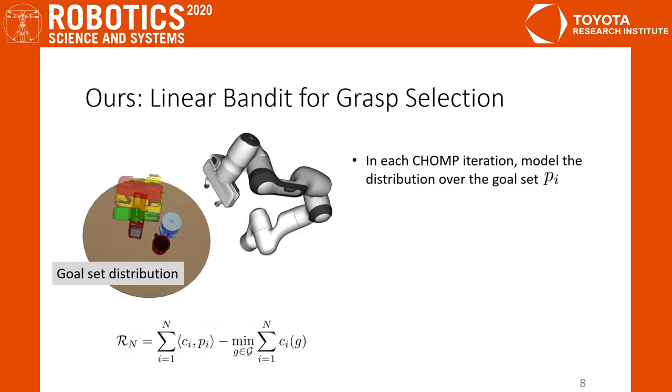In our work, we consider the online goal selection problem in a bandit setting by modeling each goal as an arm. Our action at the i-th iteration p_i is a distribution over the goal set, which represents the probability over each goal being the best one for CHOMP to plan with. The goal for the bandit is then to minimize the regret compared with the best goal in hindsight.